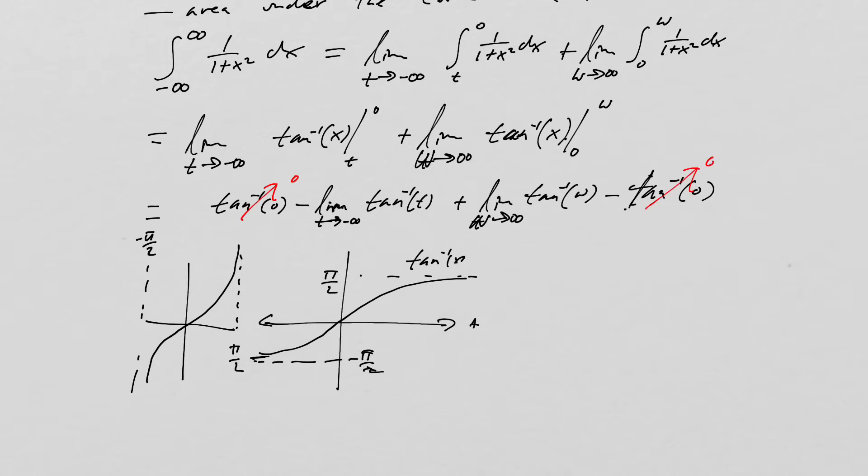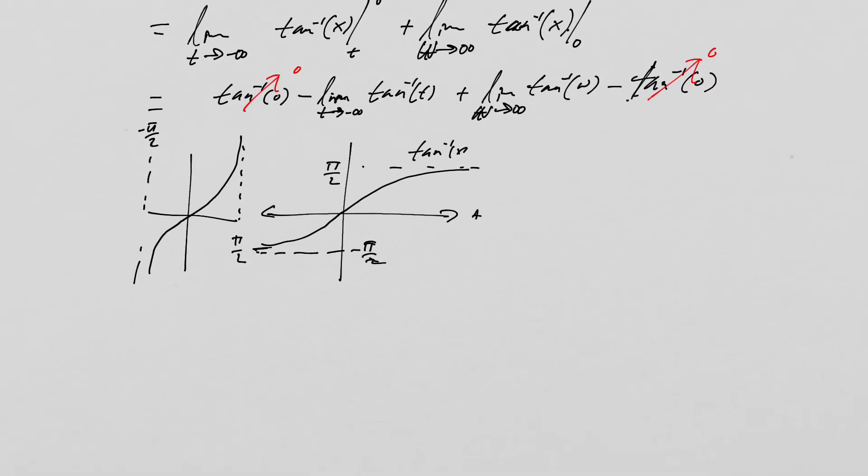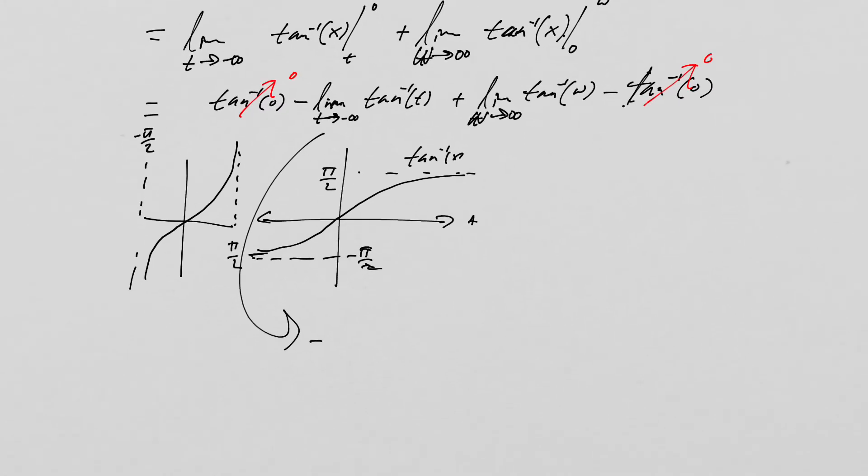And we know the answer here, that limit is simply going to be negative, a negative pi over 2.